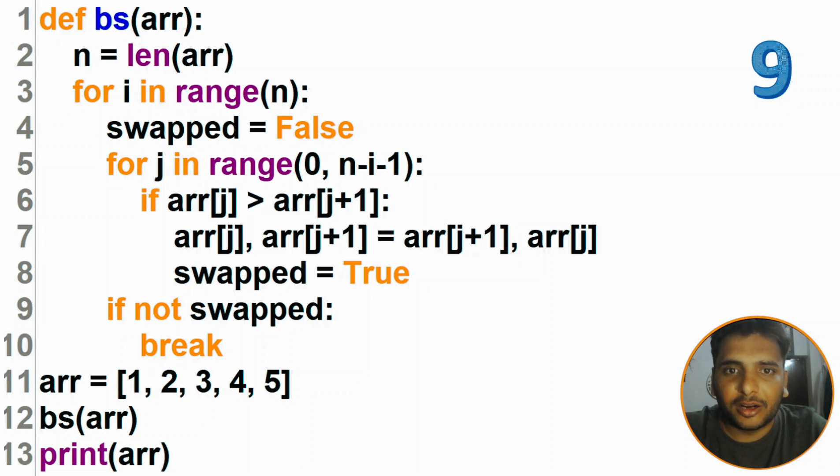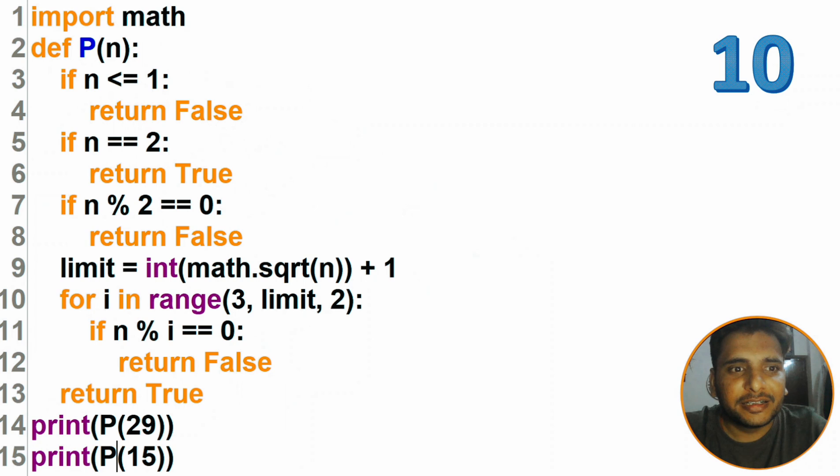And finally, it is the tenth one. Here I'm importing math because I'm doing a square root of that. In this you need to find out what exactly the output is and also the space complexity. Now I'm also displaying the key for all those questions.